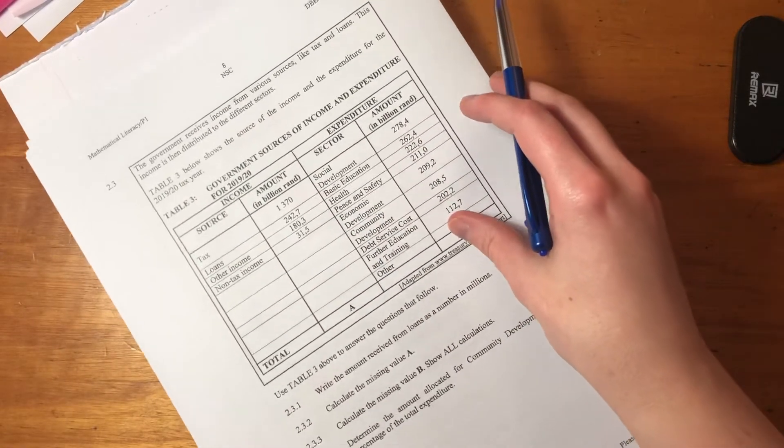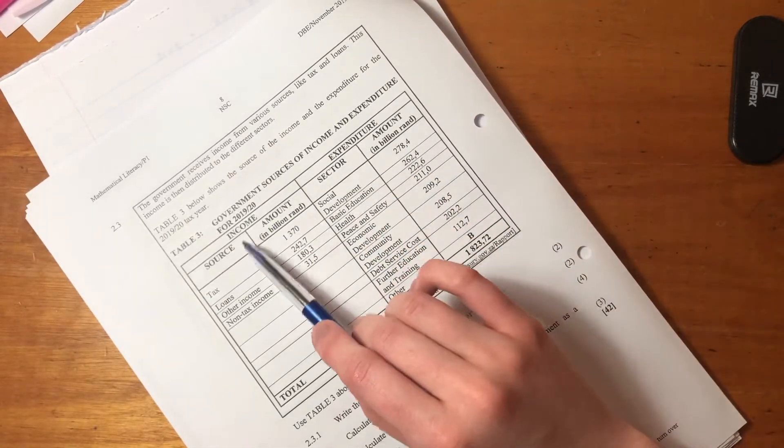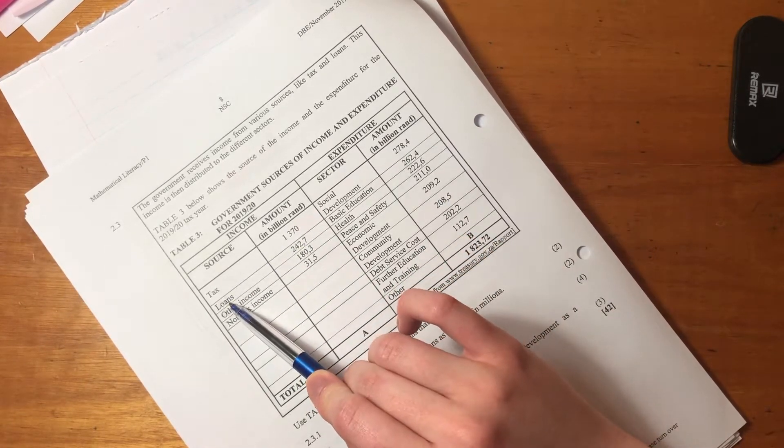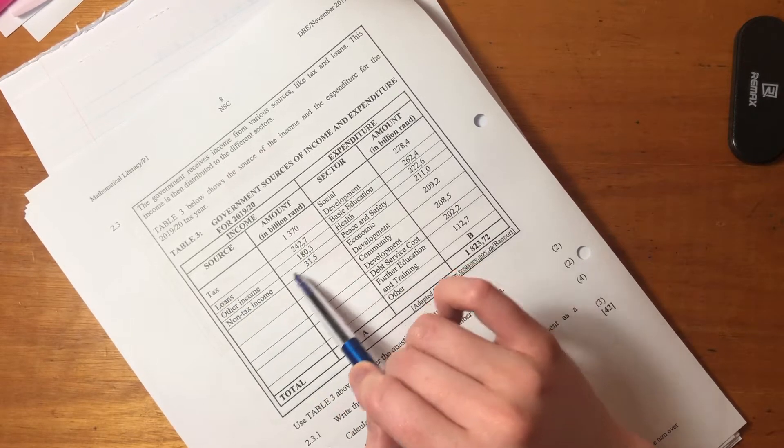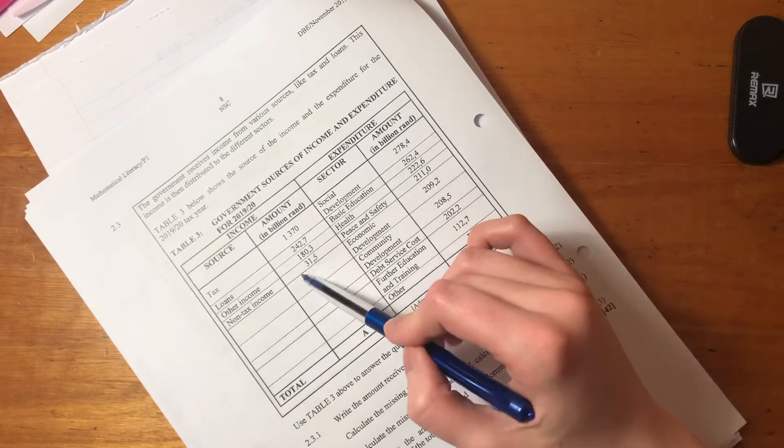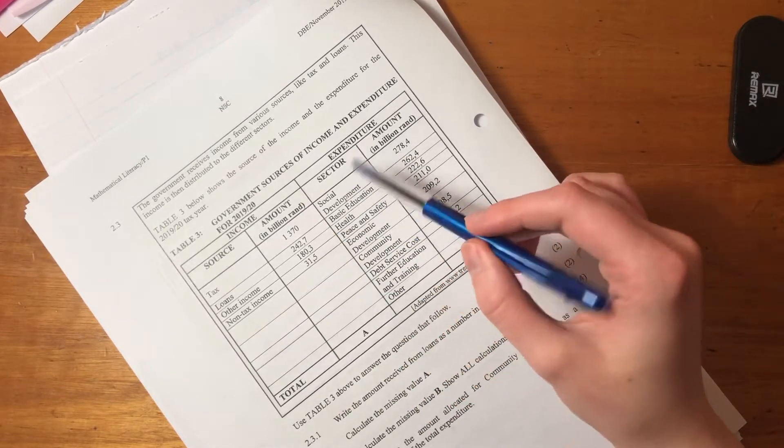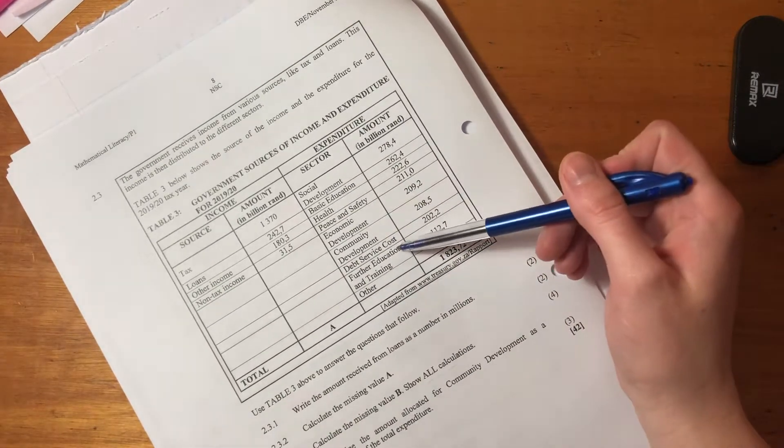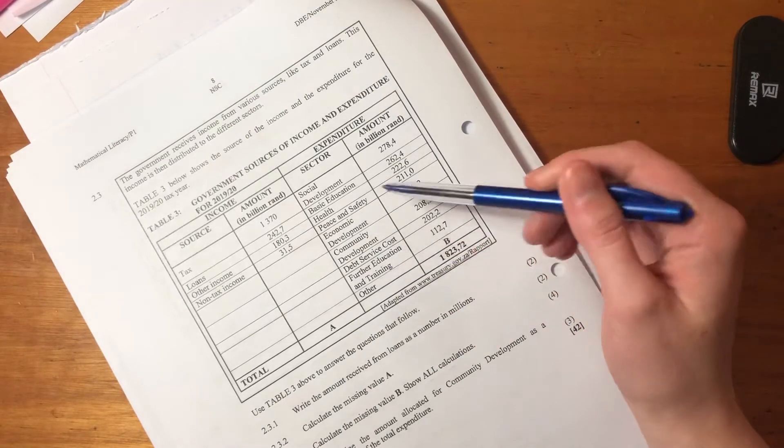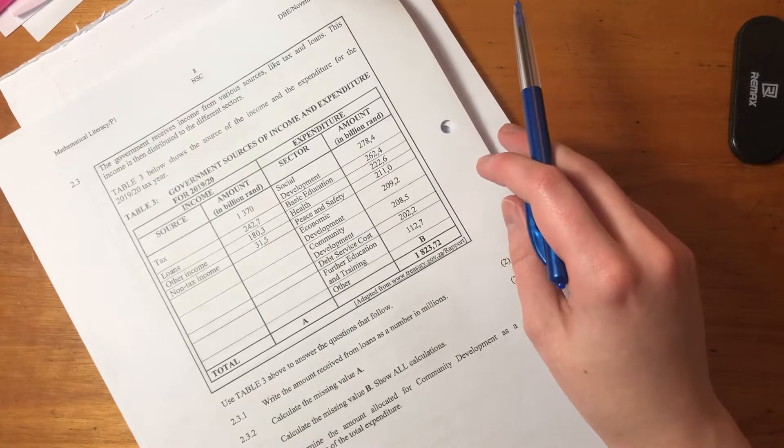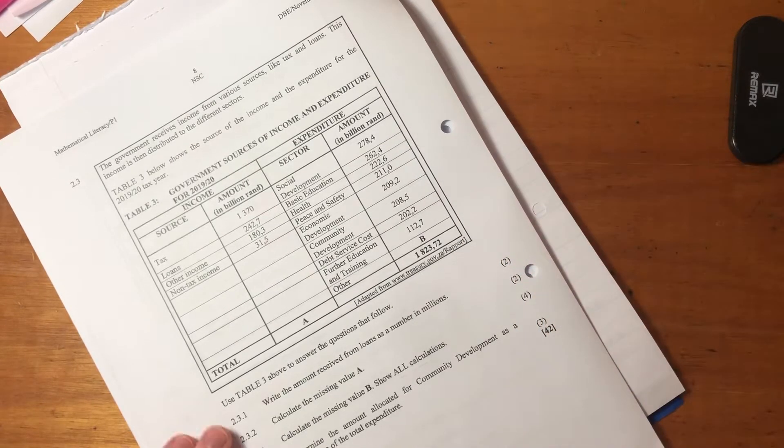Let's look at the government sources of income and expenditure. Income is taxes - they get the most amount of tax. We get loans, some other income, not sure what that's from, and then non-tax income. That could be donations or something like that. Then we have expenditure, various things. You can see education, which is always great to see. And then community development, economic development, basically trying to make South Africa a better country and serve its citizens.